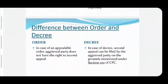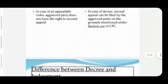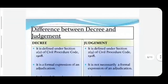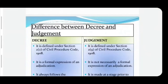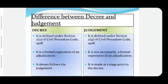The last difference between order and decree: in the case of an appealable order, the aggrieved party does not have the right to a second appeal, while in the case of a decree, a second appeal can be filed by the aggrieved party on the grounds mentioned under section 100 of the Civil Procedure Code. Now we would study the difference between decree and judgment. A decree is defined under section 2 clause 2, while judgment is defined under section 2 clause 9 of the Civil Procedure Code 1908.